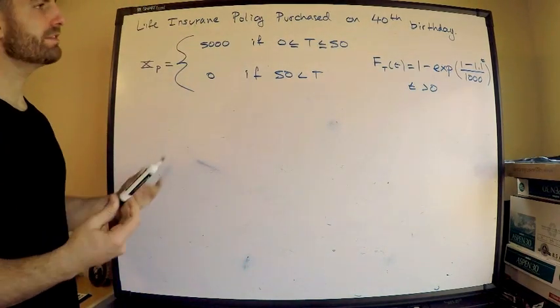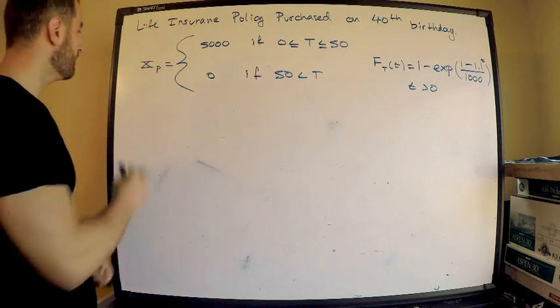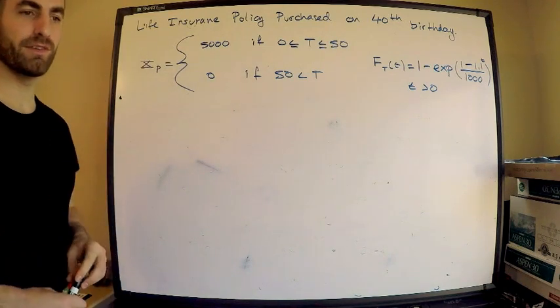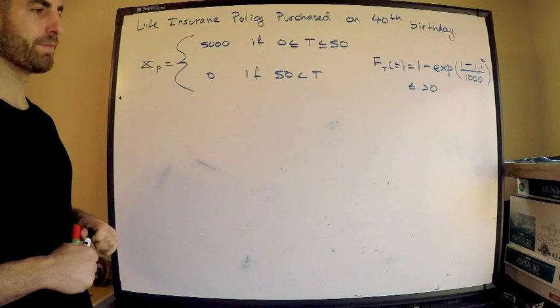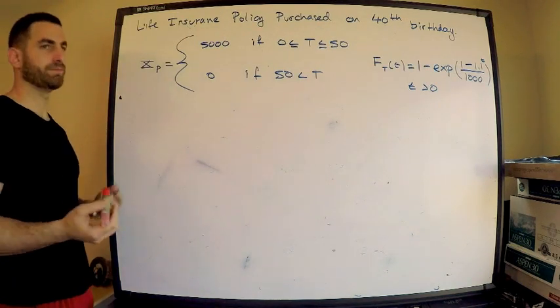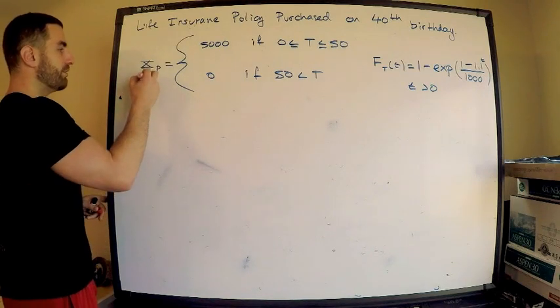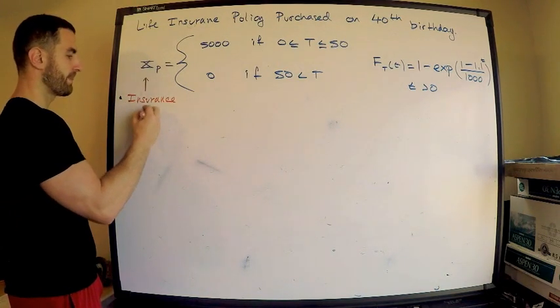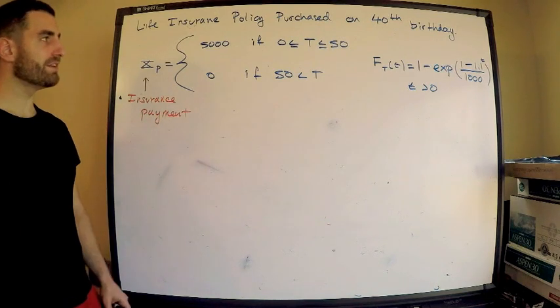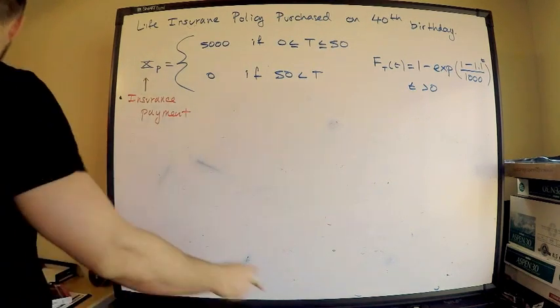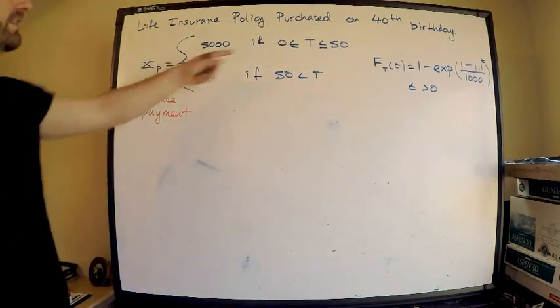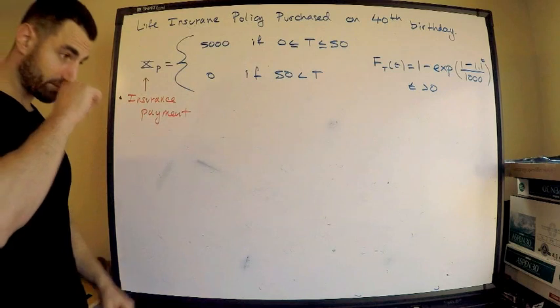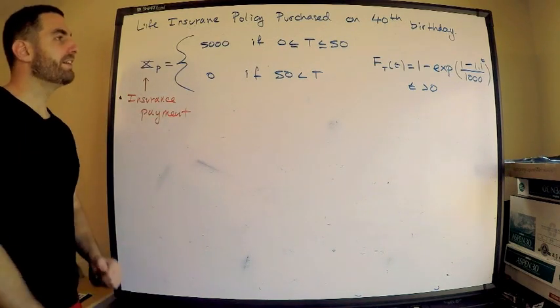This is the setup. Again, read the question five to a hundred times as usual. What do we have, what are we given? Let's just go over what we're given. A man purchases a life insurance policy on his 40th birthday, and we get a payment. This is always, remember, if you've seen my videos before, you know that I always do some sort of something sub P as my insurance payment. This is my insurance payment.